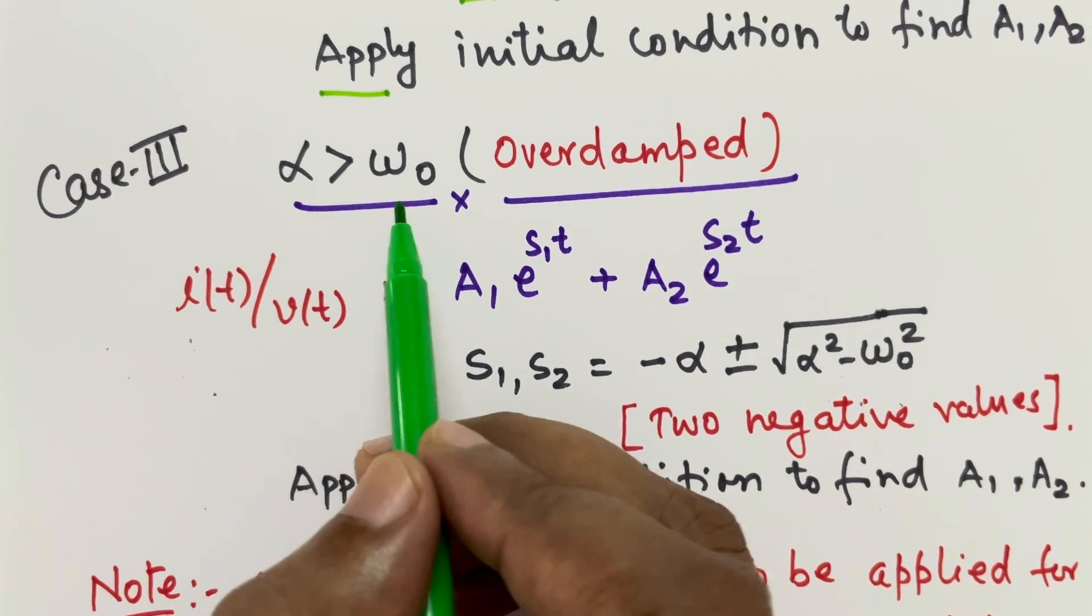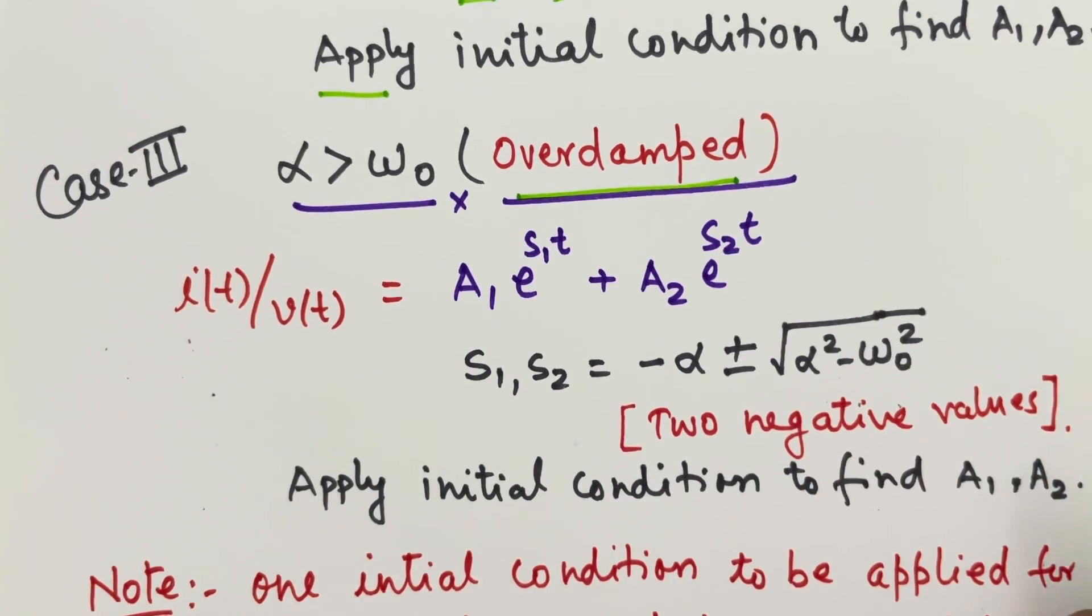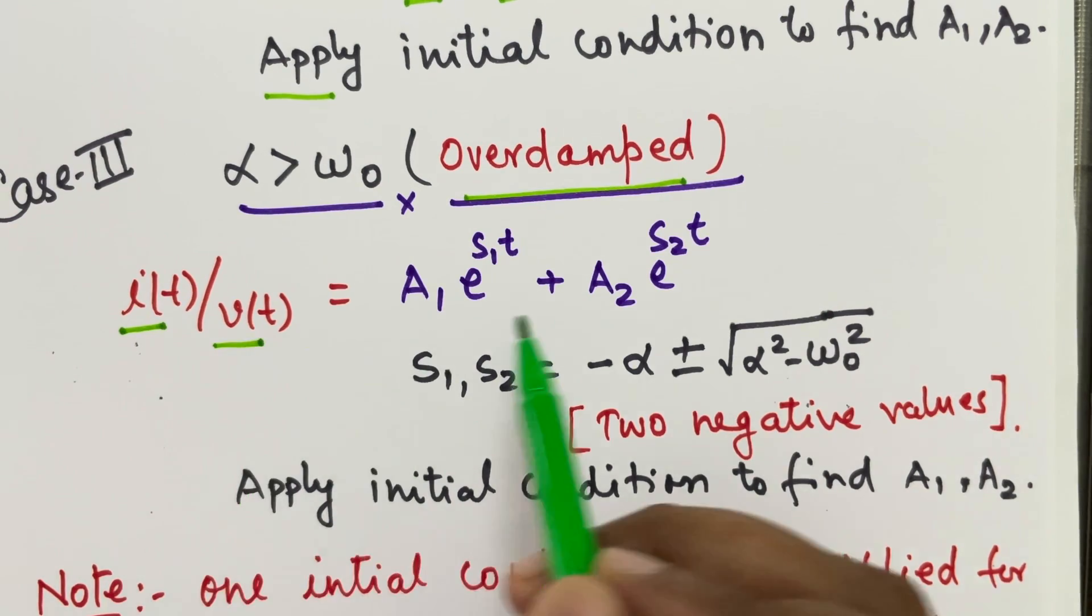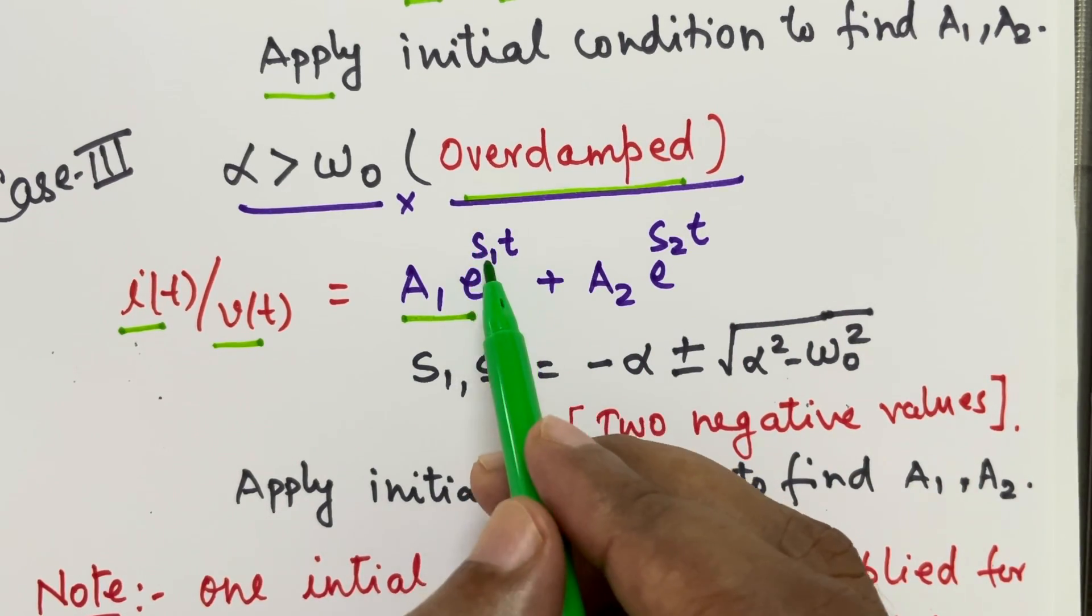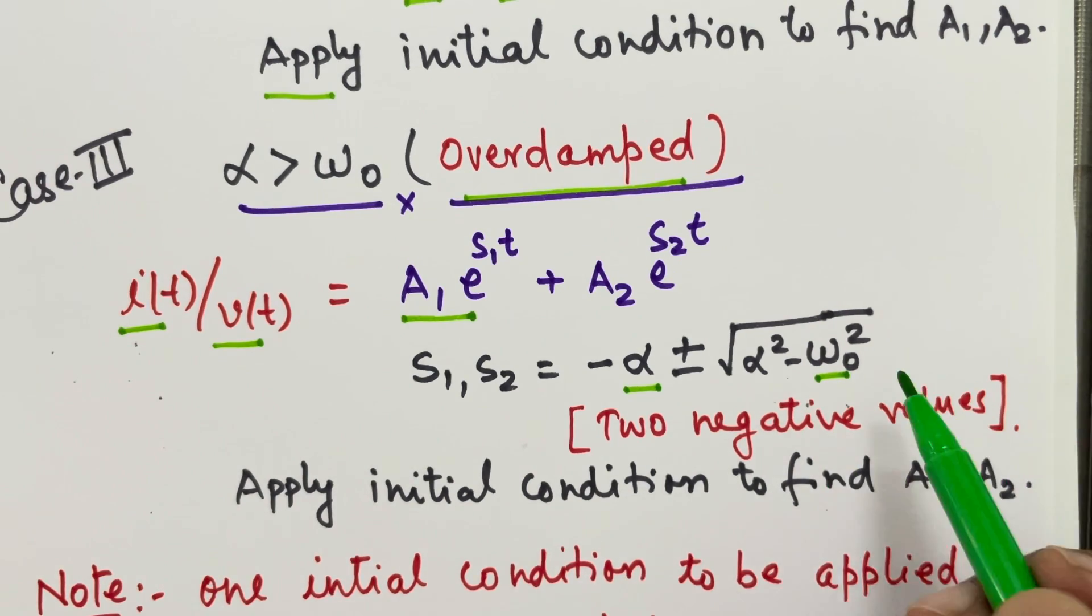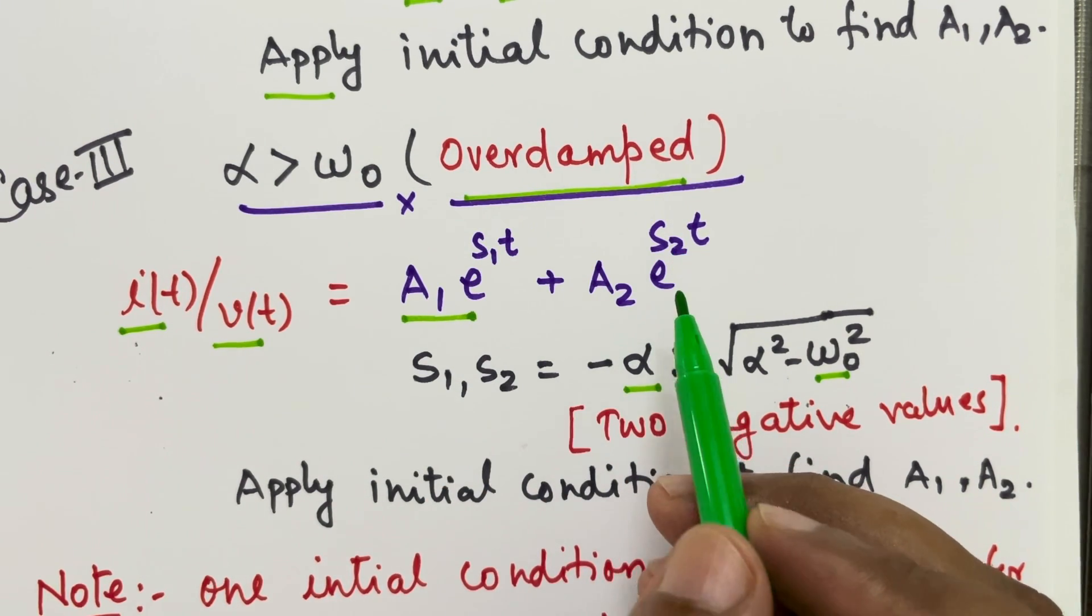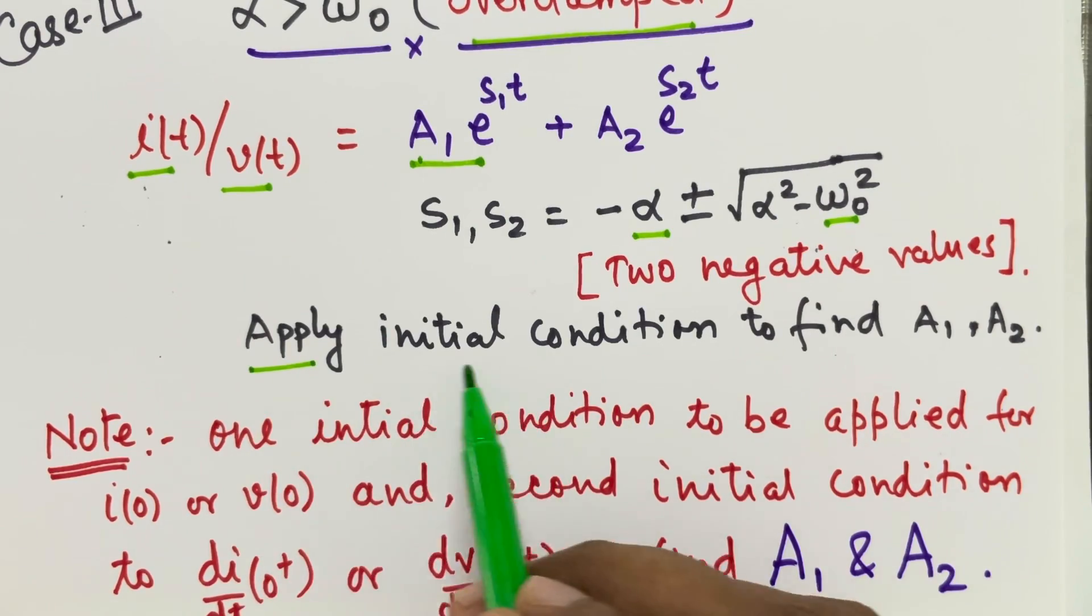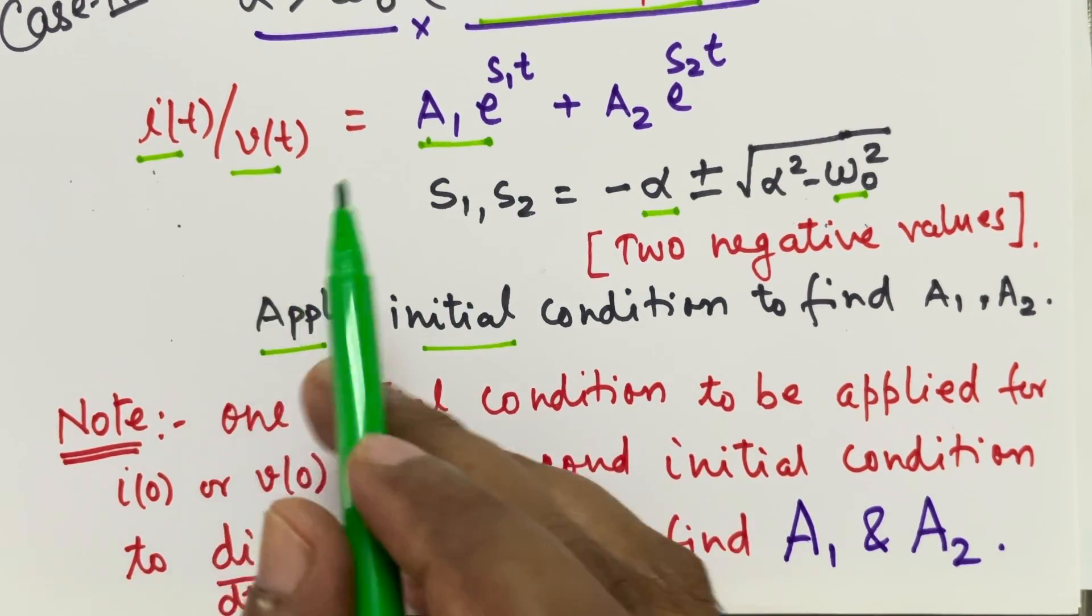Now the case 3, when alpha is greater than omega naught. So if you get alpha which is larger than omega naught, that case is called over damped and the previous case was critically damped. This is over damped. In this case, you can write expression for I(T) and V(T) as A1 e to the power S1 T plus A2 e to the power S2 T. Now here S1 is given as minus alpha plus minus under root alpha square minus omega naught. So both value is known, alpha and omega naught, both are known. So you can find out S1, S2. Both will be negative, S1 as well as S2 will be negative and A1 and A2 is unknown and the process remains same. To find A1 and A2, you have to apply initial condition in terms of either I(T) dI by dT or V(T) dV by dT at T equal to 0.